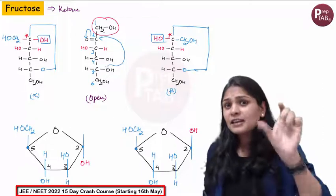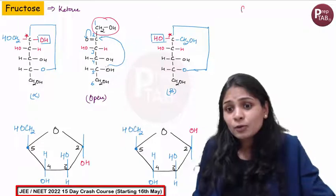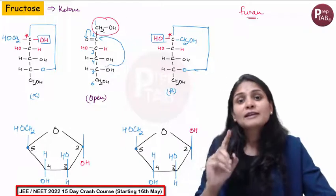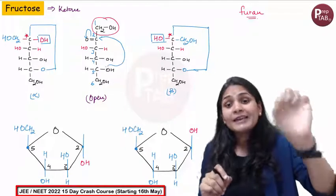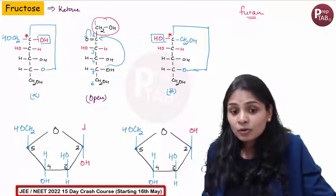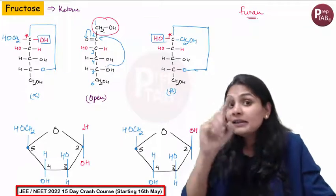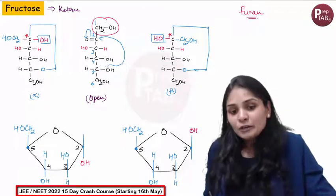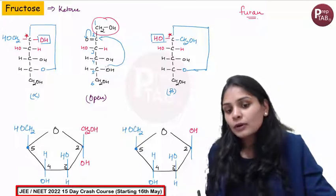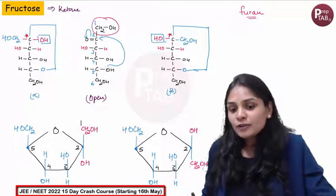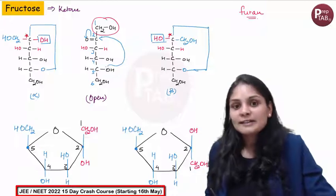Now guys, this is a 5-membered ring, similar to furan — a 5-member ring. Why is this? Because the ketone is at the second carbon. And what is on the second carbon? Since it is a ketone and not an aldehyde, there is no hydrogen at C2. So the first carbon is CH2OH. This is your first carbon.